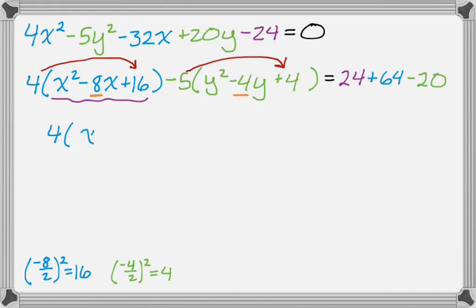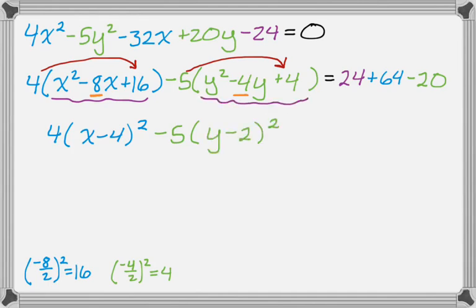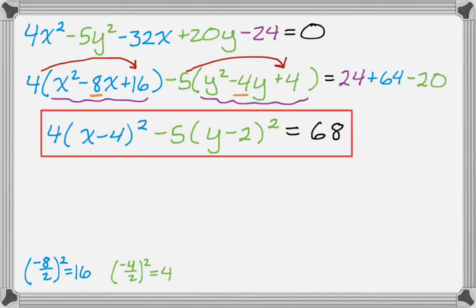Each set of parentheses gives a perfect square trinomial — 4 times (x minus 4) squared, minus 5 times (y minus 2) squared, and then just collect those constants. So that's three examples of completing the square — it covers really everything you need to do. I hope you found this helpful, good luck!